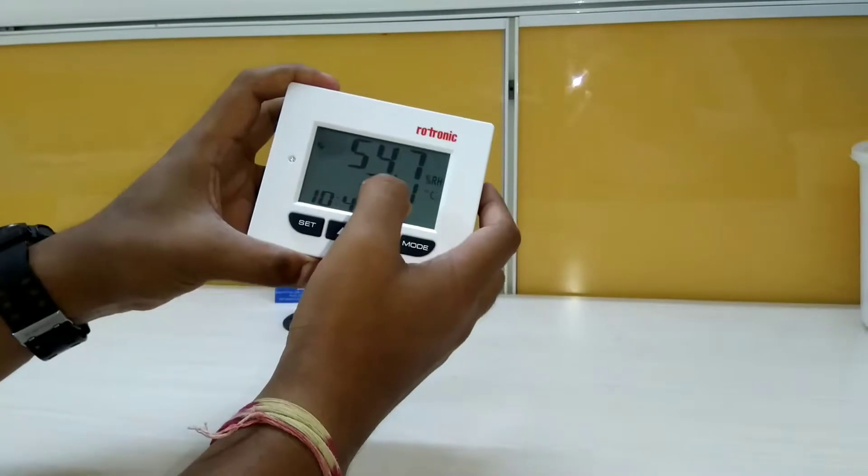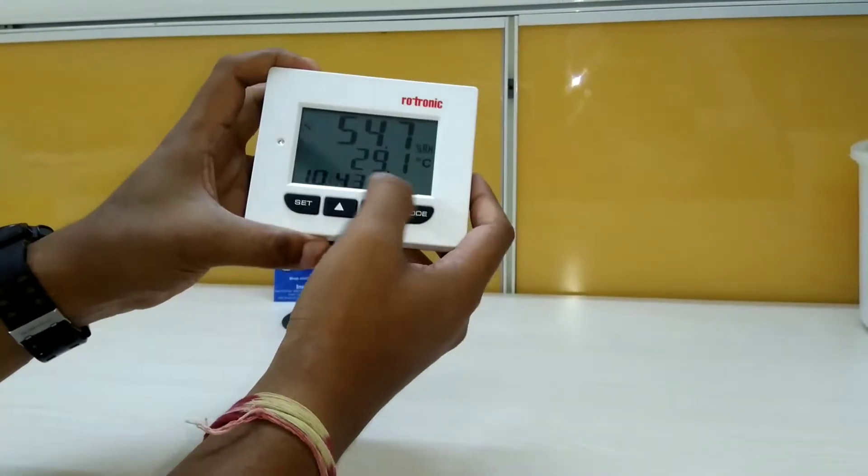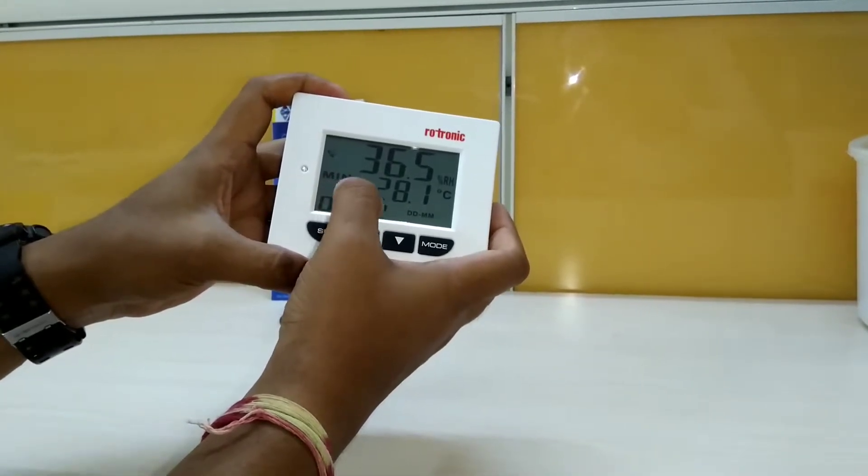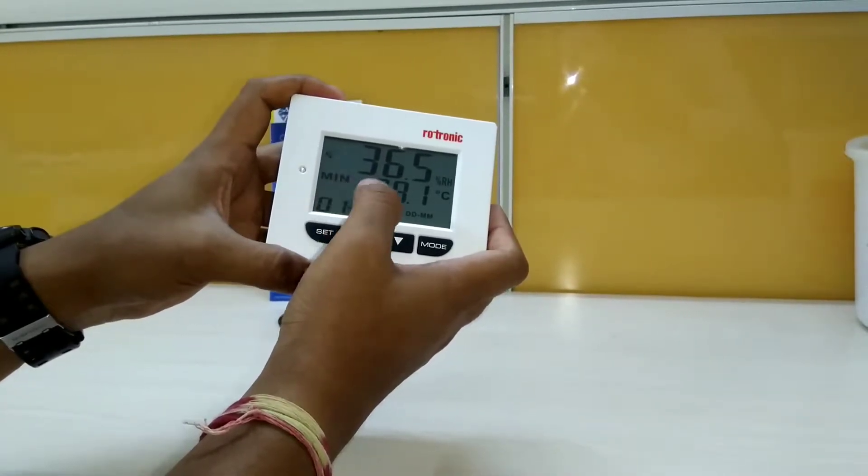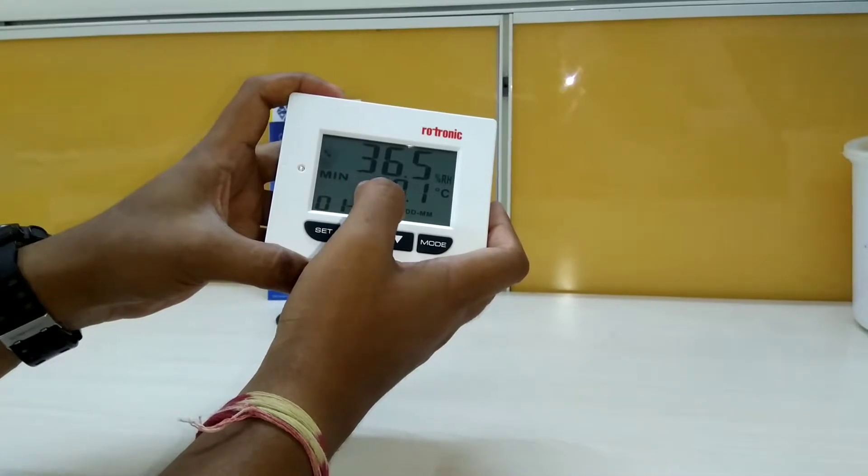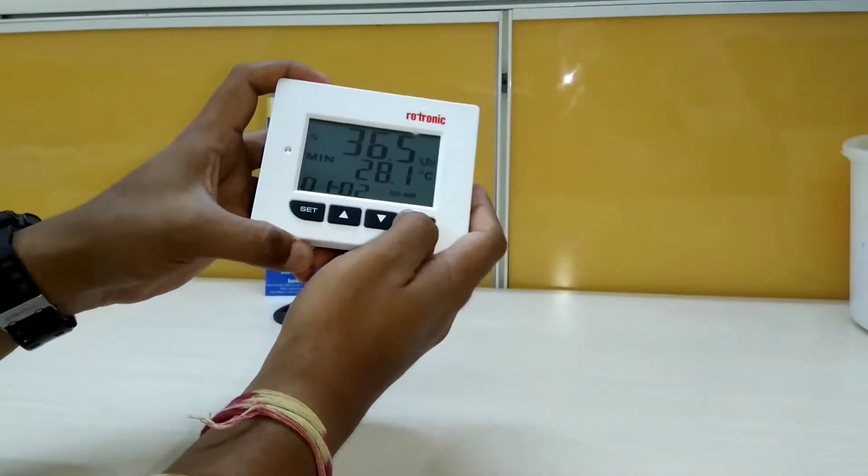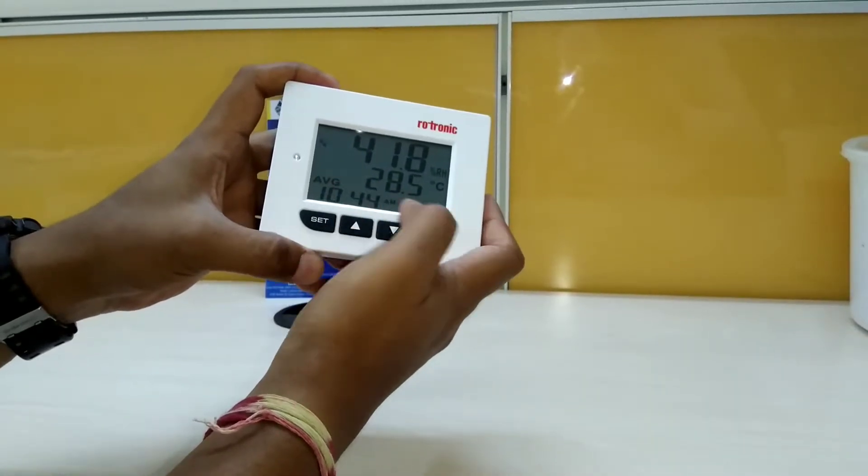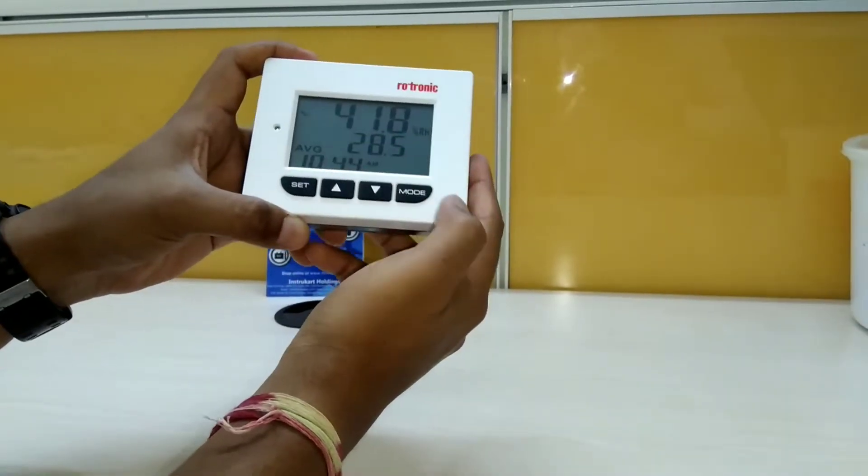This has got 3 modes of operation where we can see the last 7 days data. We can see the minimum temperature which occurred in the last 7 days, the maximum which occurred in the last 7 days, and an average with this mode function.